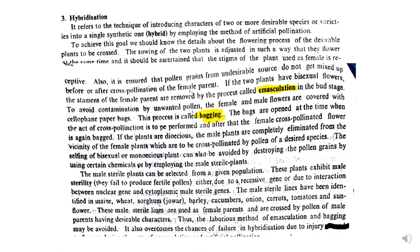The third technique is hybridization, which involves introducing characters of two or more desirable species into one, so that a synthetic hybrid is made by artificial pollination. This process involves emasculation, where if the two plants have bisexual flowers, the stamens of the female parent are removed. Emasculation is the removal of anthers — the male reproductive part — from a bisexual flower so that artificial cross-pollination can be done.